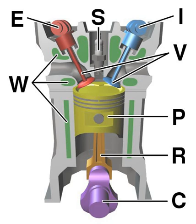The term internal combustion engine usually refers to an engine in which combustion is intermittent, such as the more familiar four-stroke and two-stroke piston engines, along with variants, such as the six-stroke piston engine and the Wankel rotary engine.